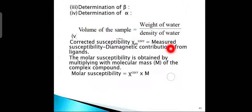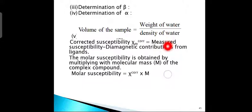Calculation of χ_M correction: substituting the values of α, β, and F′/m into the equation, the magnetic susceptibility is calculated. The experimentally determined value of magnetic susceptibility consists of contributions from both paramagnetic and diamagnetic susceptibilities. Therefore, it is to be corrected by subtracting diamagnetic contributions from ligands present in the complex compound. The diamagnetic contributions from ligands can be calculated using Pascal's constants. Corrected susceptibility χ_corr = measured susceptibility − diamagnetic contributions from ligands. Molar susceptibility = χ_corr × M.